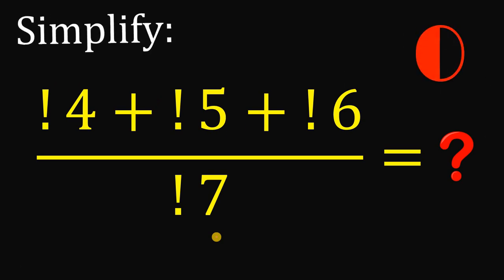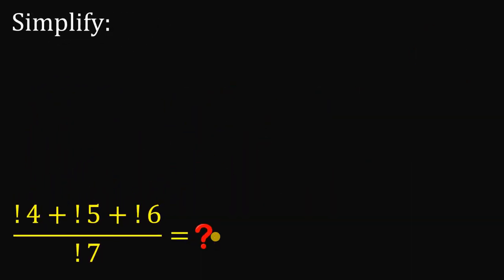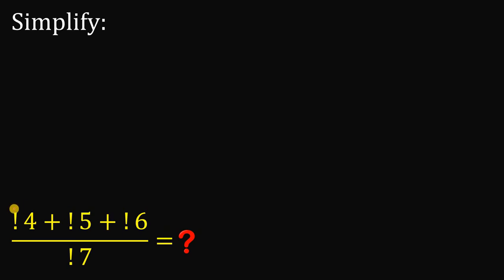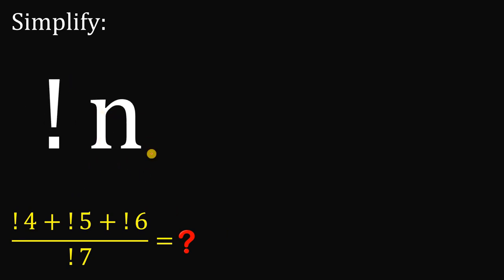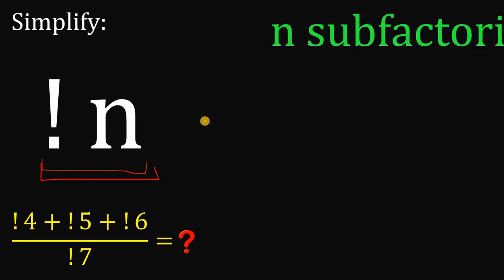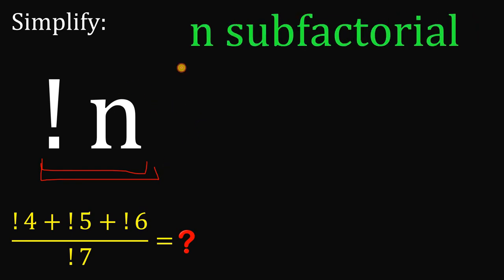Now let's answer this question together. The question is: what is this notation wherein the factorial symbol is written first before the number — simply an exclamation mark and then n? This notation is equivalent to what we call n sub-factorial, and the question is: what is sub-factorial?